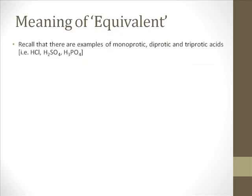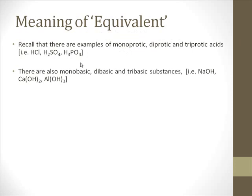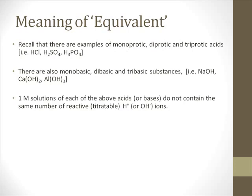You may run across the word equivalent. The concept of equivalent is useful as you work through problems like our example. We'll build up the meaning starting with some background. There are examples of monoprotic, diprotic, and triprotic acids, and similarly monobasic, dibasic, and tribasic substances. The acids create hydrogen ions in solution, and in the acid-base reaction it's hydrogen ions that are reacting with hydroxide ions. What's really fundamentally most important is the concentrations of reactive hydrogen ions and hydroxide ions.